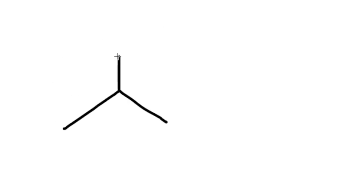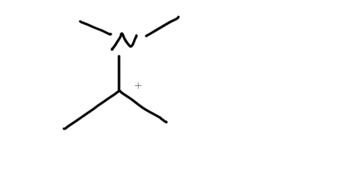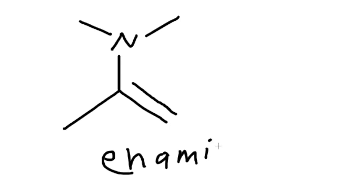For today's video, we'll be talking about the formation of secondary amines. When we do the reaction, we get something called an N-amine — an enamine — and this happens for secondary amines.